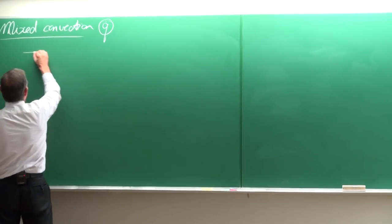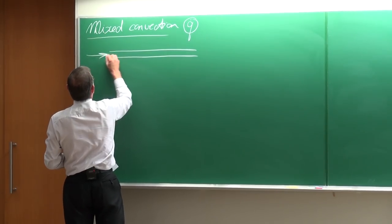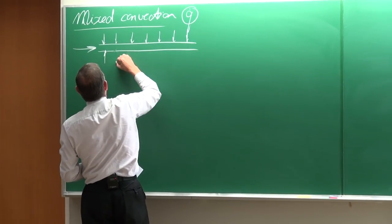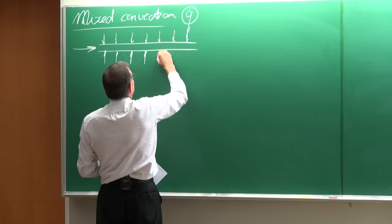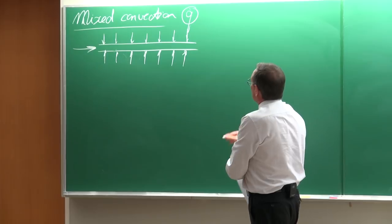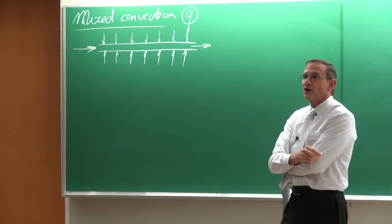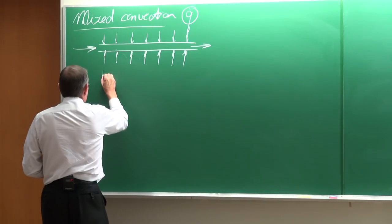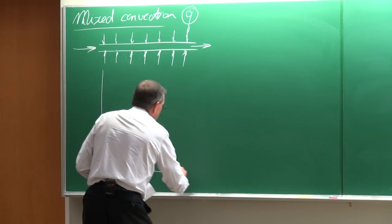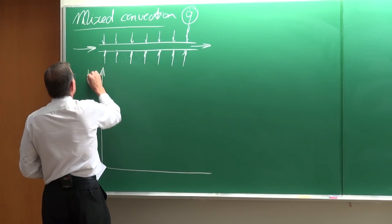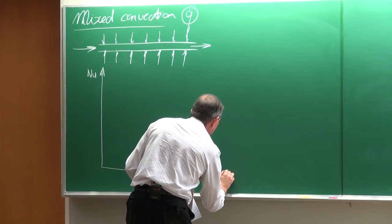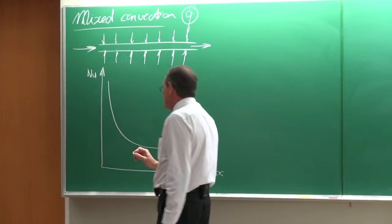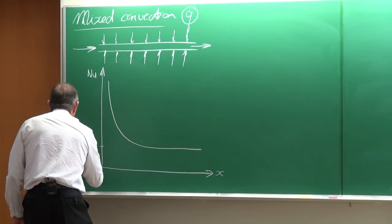If we have a tube with flow through it and then it is being heated — typically by putting a current through it or an electrical wire coiled around it — then you're going to have a case of a constant heat flux. So the amount of watts per square meter or per meter length will be a constant. If we have a case like that, then we have to distinguish between the developing part and the fully developed part. That's the Nusselt number as a function of x, and the Nusselt number is actually going to do something like that.